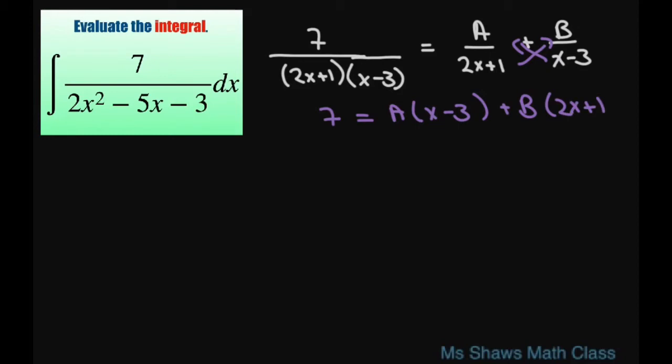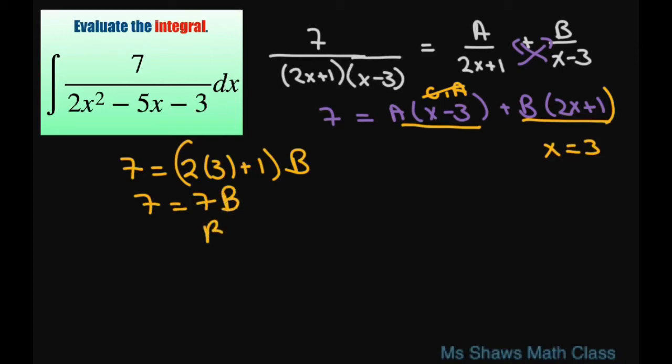So first we're going to pick x's that help eliminate the variable. Let's first pick x equals 3. That means we'll have 0 times A here. This is going to give me 7 equals 2 times 3 plus 1 times B. So 7 equals 7B, therefore B equals 1.